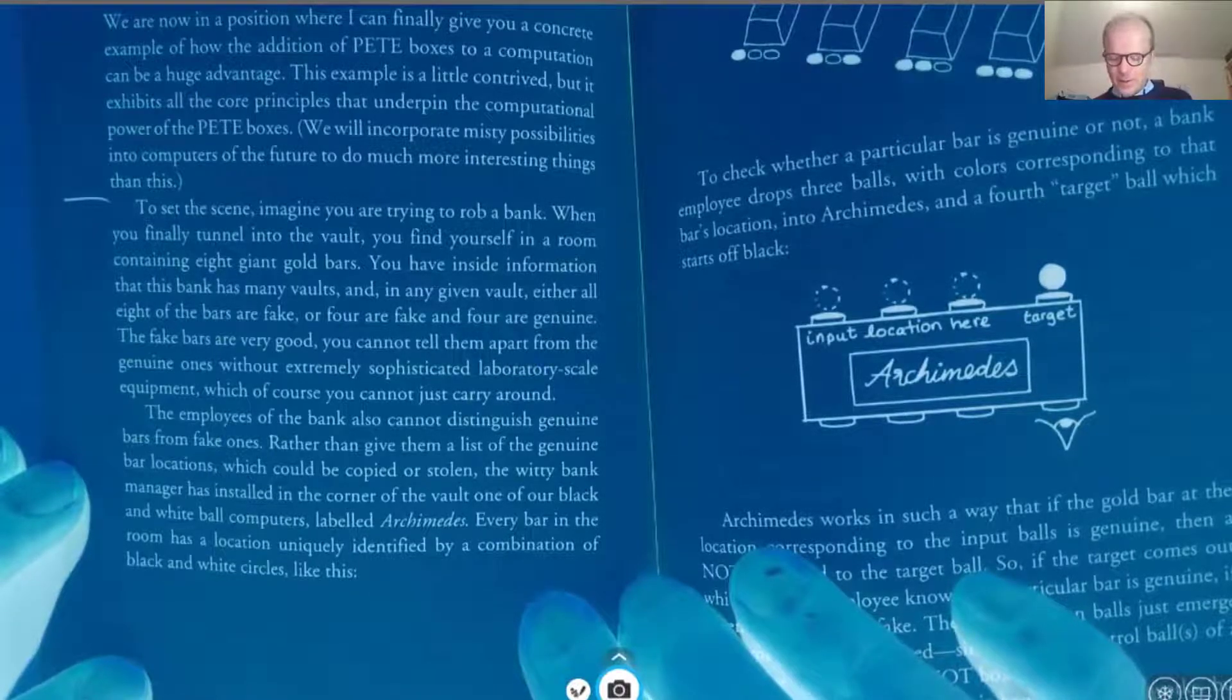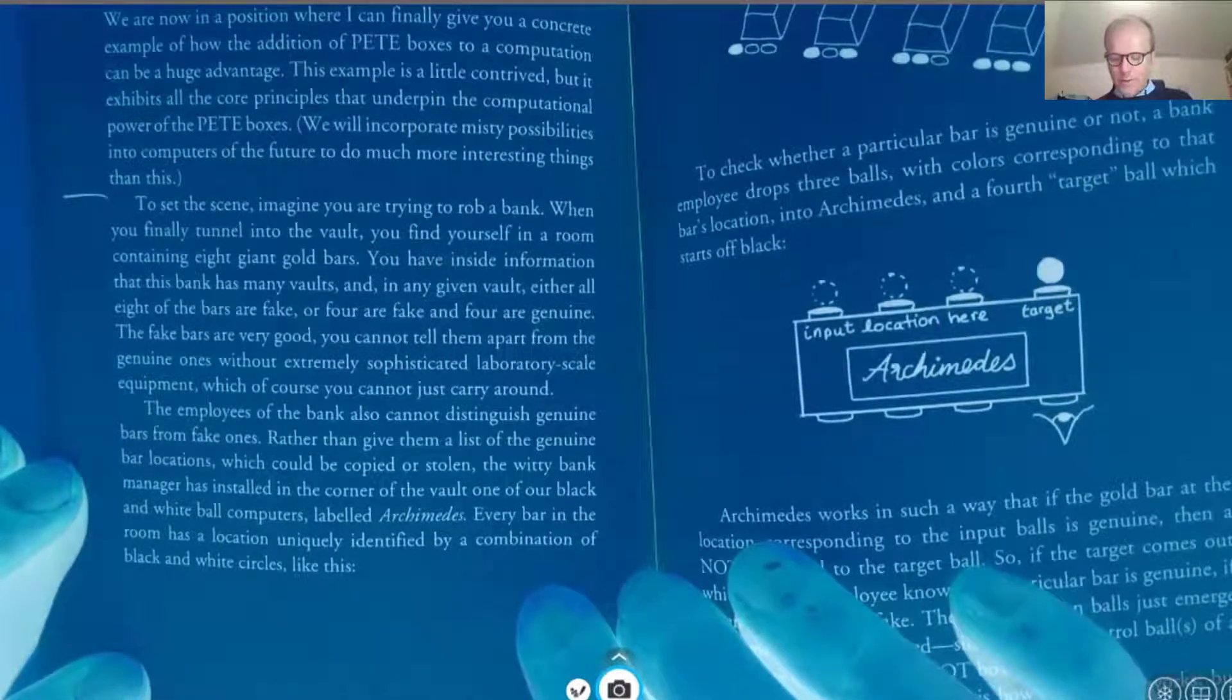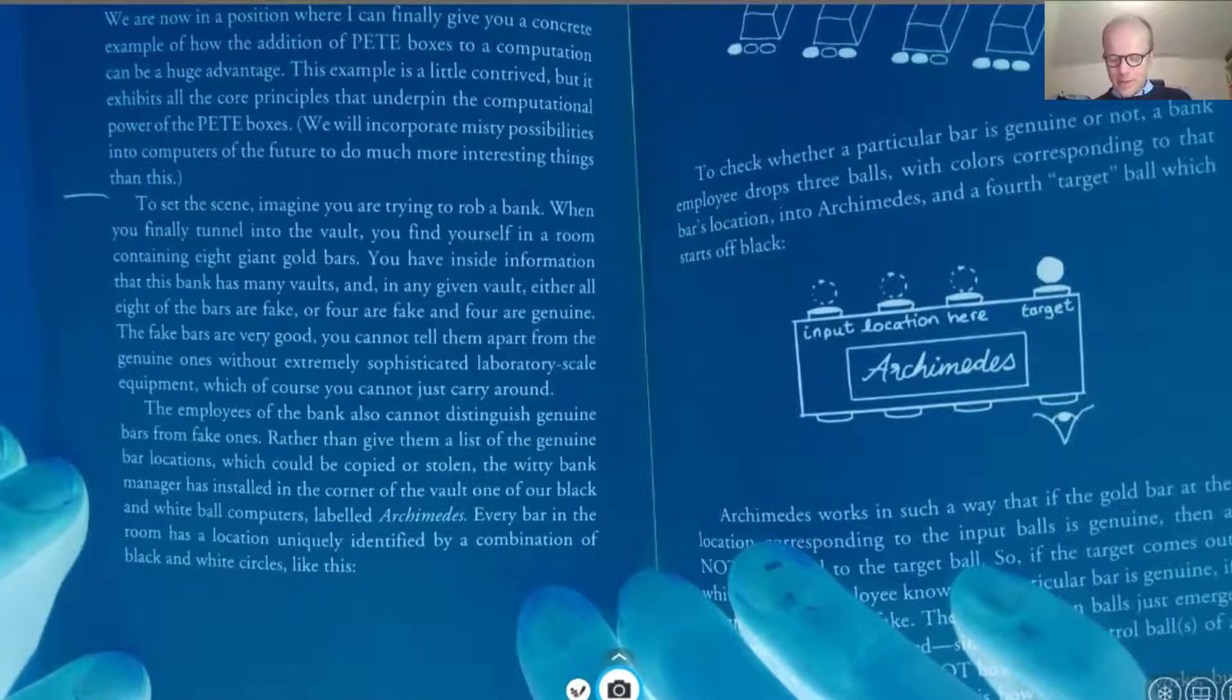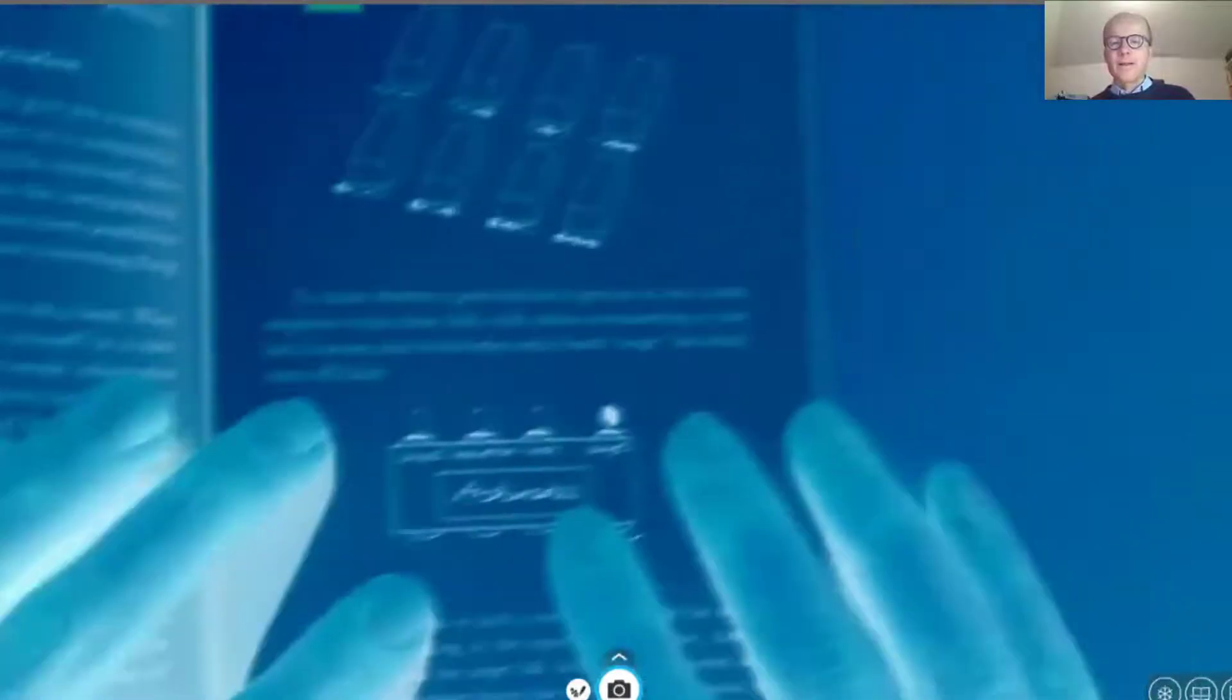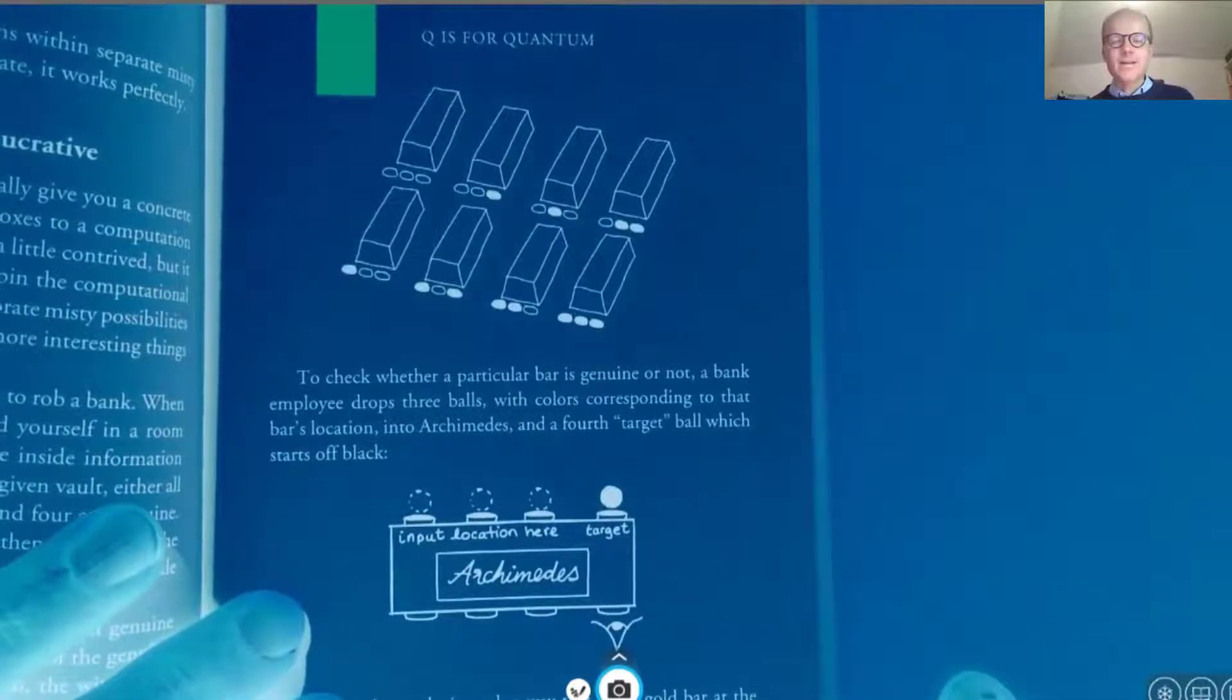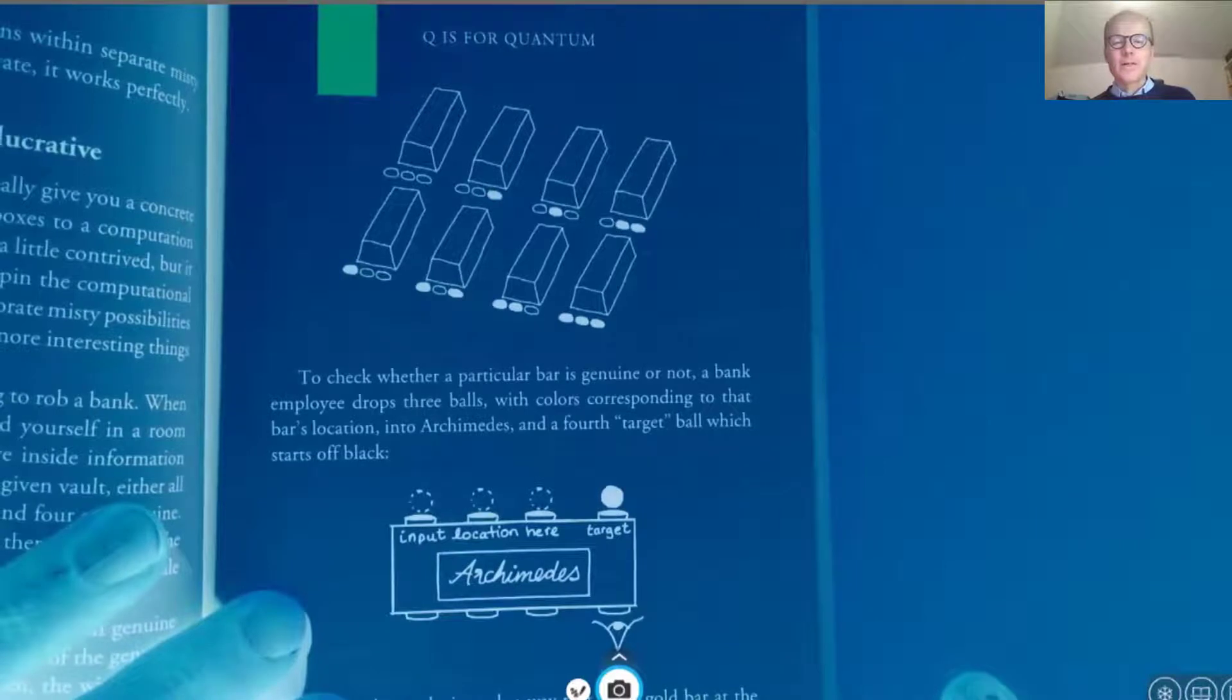the witty bank manager has installed in the corner of the vault one of our black and white ball computers labeled Archimedes. Every bar in the room has a location uniquely identified by a combination of black and white circles like this. And here you see the upper graph. These are the eight gold bars, either genuine or fake. And the location has this, each location has this code with three circles which are either filled or not.